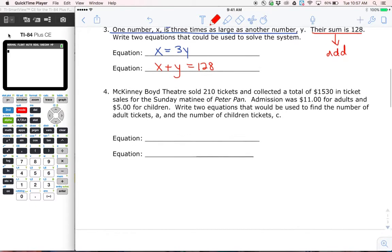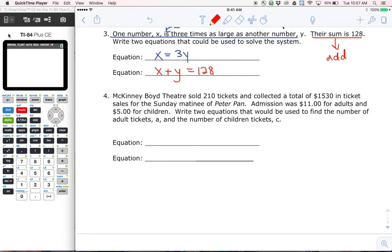Problem four. McKinney Boyd Theater sold 210 tickets and collected a total of $1,530 in ticket sales for the Sunday matinee of Peter Pan. Admission was $11 for adults and $5 for children. Write two equations that could be used to find the number of adult tickets A and the number of child tickets C.